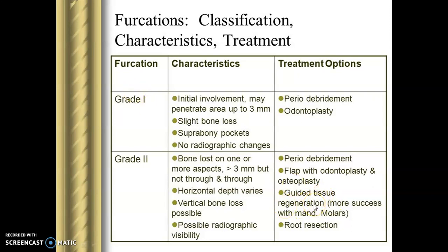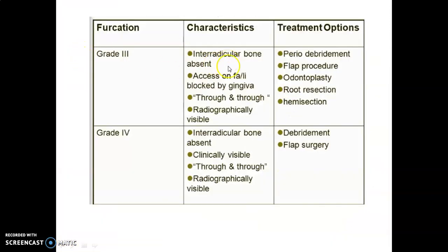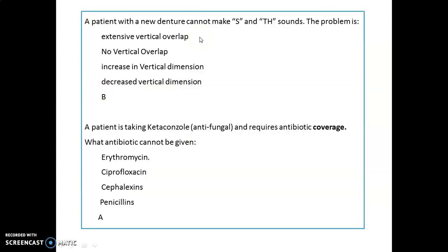GTR is most often successful with mandibular molars, and root resection is also an option. Grade 3 has interradicular bone loss — sometimes blocked by gingiva — and a probe will pass through and through. It is visible radiographically. Treatment options are debridement, flap procedure, odontoplasty, root resection, and hemisection. Grade 4 has very poor prognosis — interradicular bone is absent, clinically visible and through-and-through. Best treatment is debridement and flap surgery.